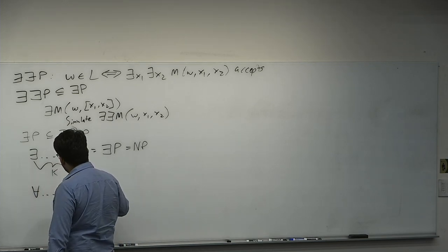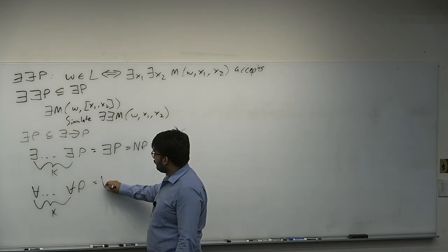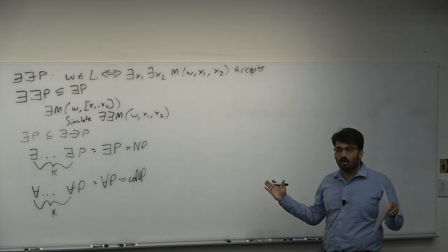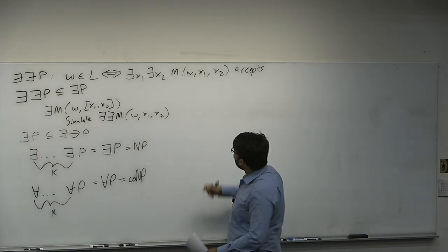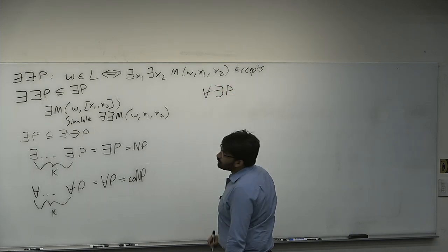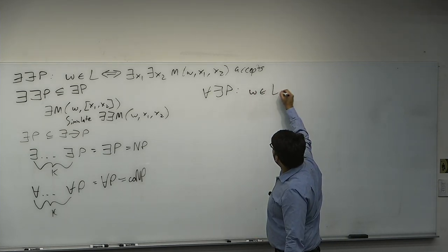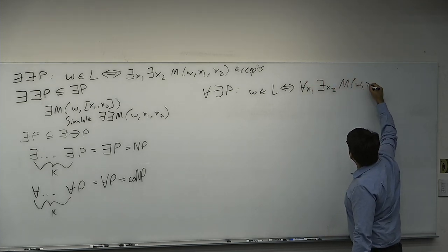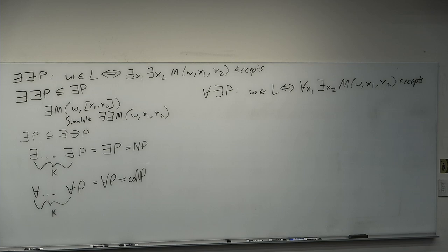Similarly, For-all-For-all-P equals For-all-P equals co-NP. Two adjacent identical quantifiers can always be compressed. Next advancement: what about For-all-Exist-P? Now you surger in two quantifiers and the order matters — this is the first logical jump. This is defined as: W is in L if and only if for all X1, there exists an X2, such that M on W, X1, X2 accepts.